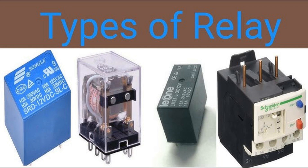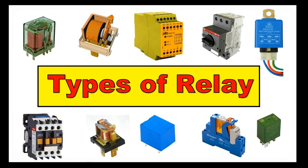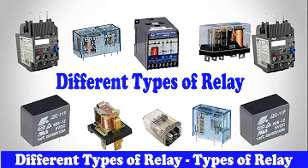Key characteristics: Fast switching — reed relays can operate at very high speeds, often switching in less than a millisecond. Compact and lightweight — the small size and minimal components make reed relays ideal for applications where space is limited. Low power consumption — the coil requires minimal current to generate enough magnetic field to close the contacts. Long life cycle — due to minimal moving parts and sealed contacts, reed relays typically have a longer operational lifespan than traditional electromagnetic relays. Advantages: High-speed operation, sealed contacts protected from dust, moisture, and corrosion, low contact resistance providing efficient signal transfer, and good electrical isolation.